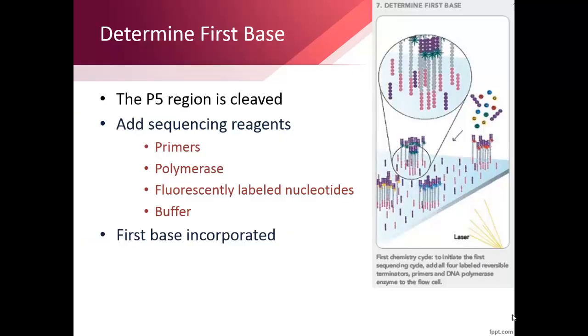The P5 region is cleaved, resulting in clusters containing only fragments which are attached by the P7 region. This ensures that all copies are sequenced in the same direction. The sequencing primer anneals to the P5 end of the fragment and begins the sequencing by synthesis process.